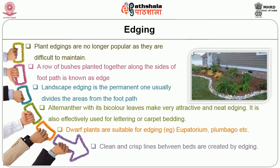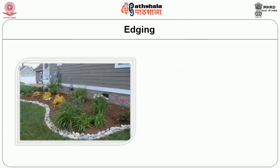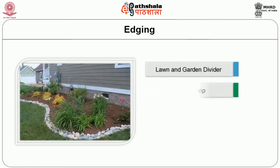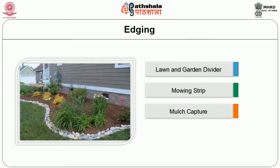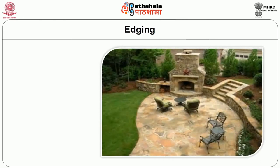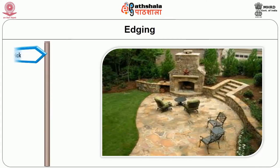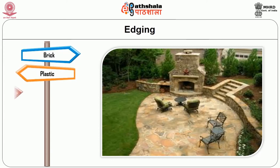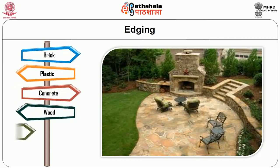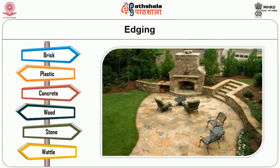Clean and clipped lines between the beds are created by edging. The materials used for landscape edging are lawn and garden divider, mowing strip, mulch capture and beauty edge. Clearly contrasting colours with surrounding foliage and flowers are suitable for edging. For more formal beds, use uniform materials. Brick, plastic, concrete, wood, stone and wattle are also used as edging materials.